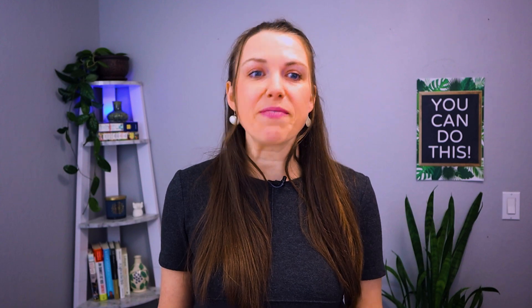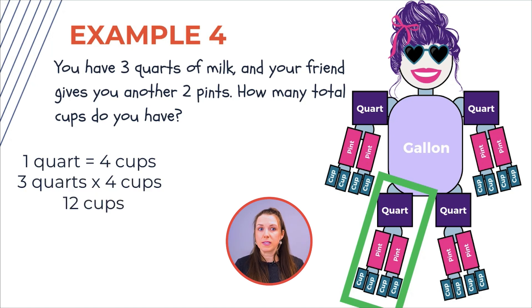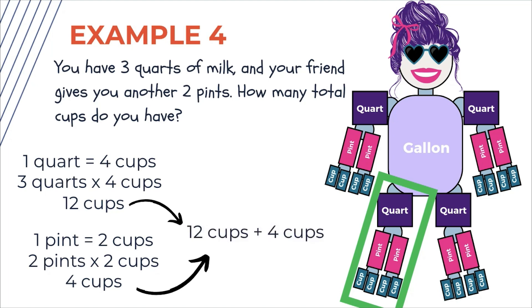Back to our Gallon Gal — you have three quarts of milk and your friend gives you another two pints. How many total cups do you have? We're mixing pints, quarts, and cups all together. One quart is four cups, so three quarts times four cups is 12 cups. One pint is two cups, so two pints times two cups is four cups. Add 12 cups plus four cups and you get 16 cups. Bonus: 16 cups is one full gallon of milk!